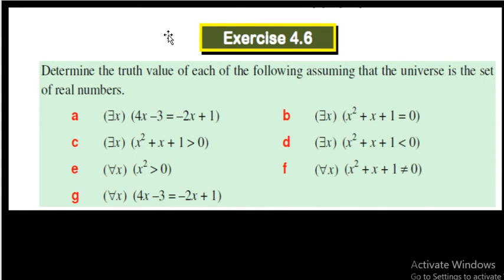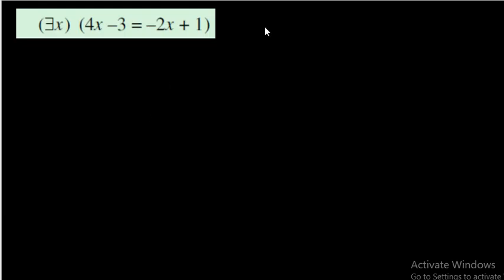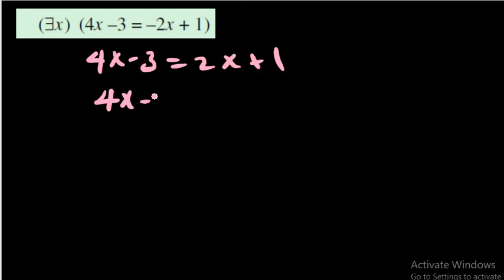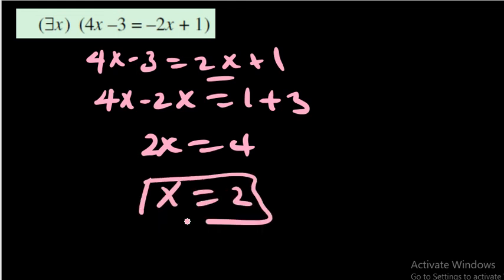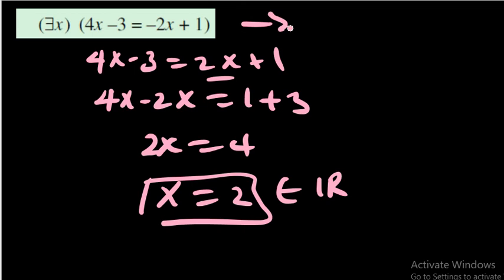Let us solve this linear equation: 4x − 3 = −2x + 1. Collecting x terms on the left: 4x − 2x = 1 + 3, so 2x = 4. Dividing both sides by 2, x = 2. This number is an element of the real numbers, so there is a real number x satisfying this condition — namely x = 2 — therefore this statement is true.